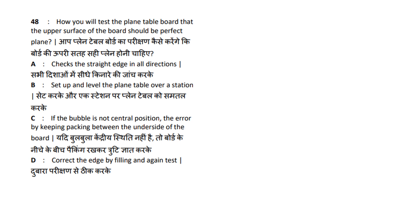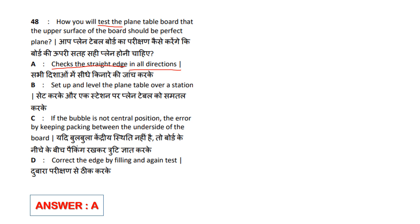How will you test the plane table board that the upper surface should be a perfect plane? Options: A) Check the straight edge in all directions; B) Set up and level the plane table over a station; C) If the bubble is not in central position, correct the error by keeping packing between the underside of the board; D) Correct the edge by filing and again test. Answer is option A — check the straight edge in all directions.